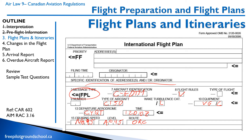Let's say I want to go to Sioux Lookout. I'm going to go direct CYXL. Then in brackets, I put how long I'm there — I'm going to be there 30 minutes. Then I repeat the name of the airport, CYXL, and then continue going direct.